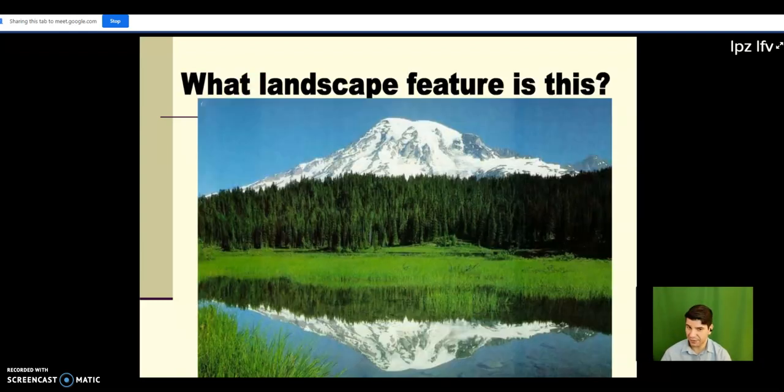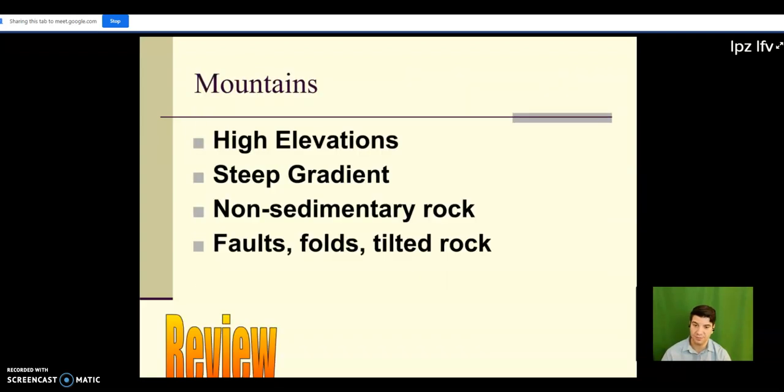Now this guy's a little bit different, right? Covered in snow. Snow has nothing to do with it. But it's definitely got a bumpier surface to it. It's definitely much higher than a plateau would be. And the biggest thing is there's no horizontal bedrock. I don't see horizontal lines criss-crossing the surface. So this is a mountain. Mountains are high elevation, steep gradient, non-sedimentary. Generally speaking, it's going to be metamorphic rock.